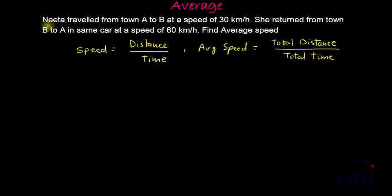So here in this problem we have to find the average speed. If we read the problem, the problem statement is Nita traveled from town A to town B at a speed of 30 kilometers per hour. She returned from town B to town A in same car at a speed of 60 kilometers per hour. Find the average speed.